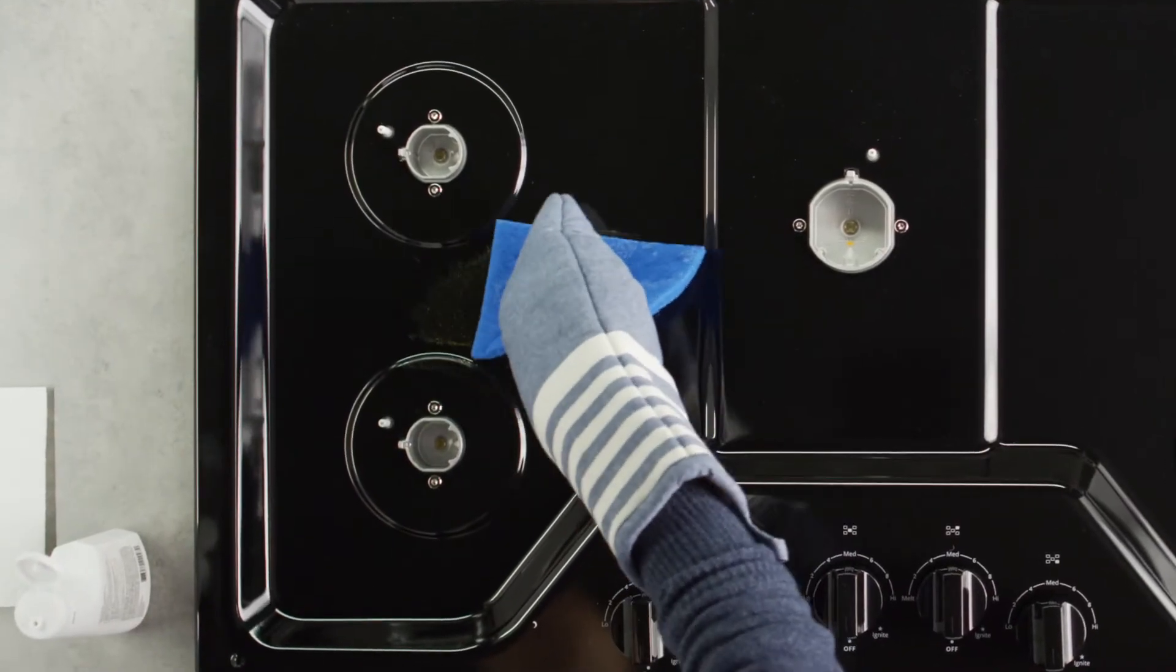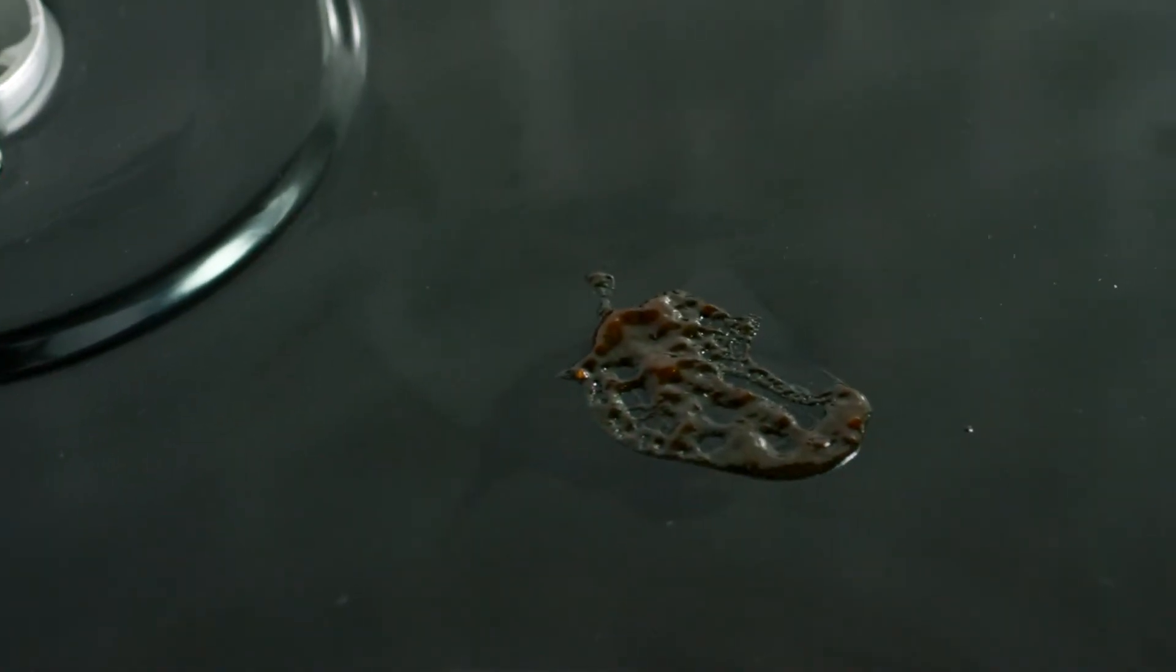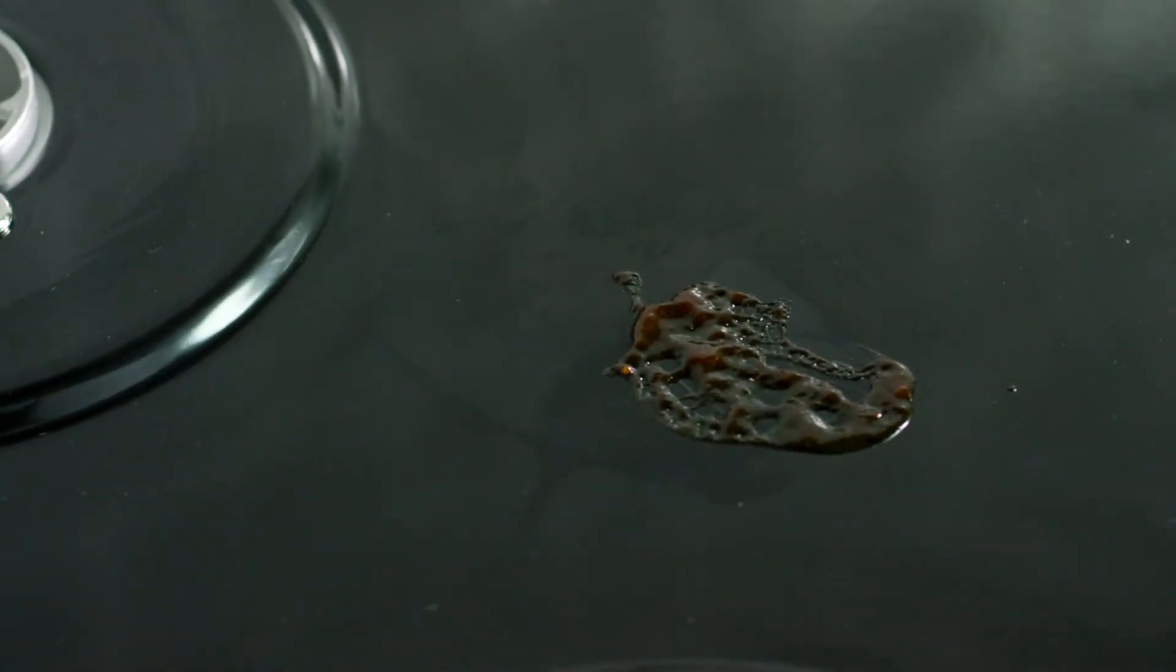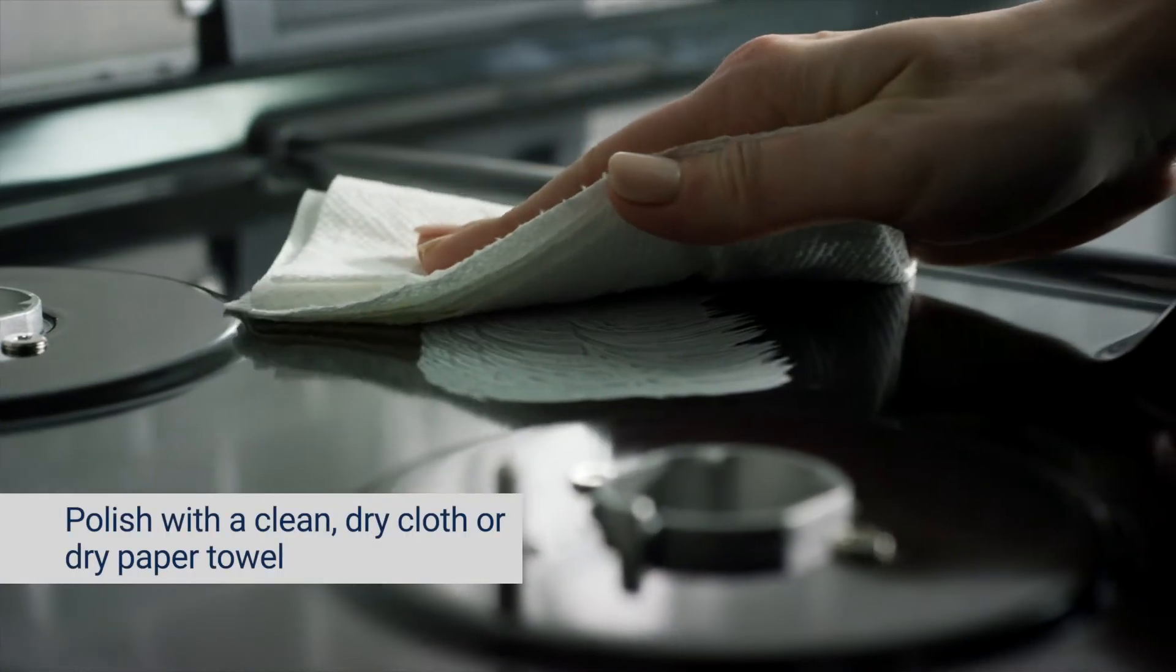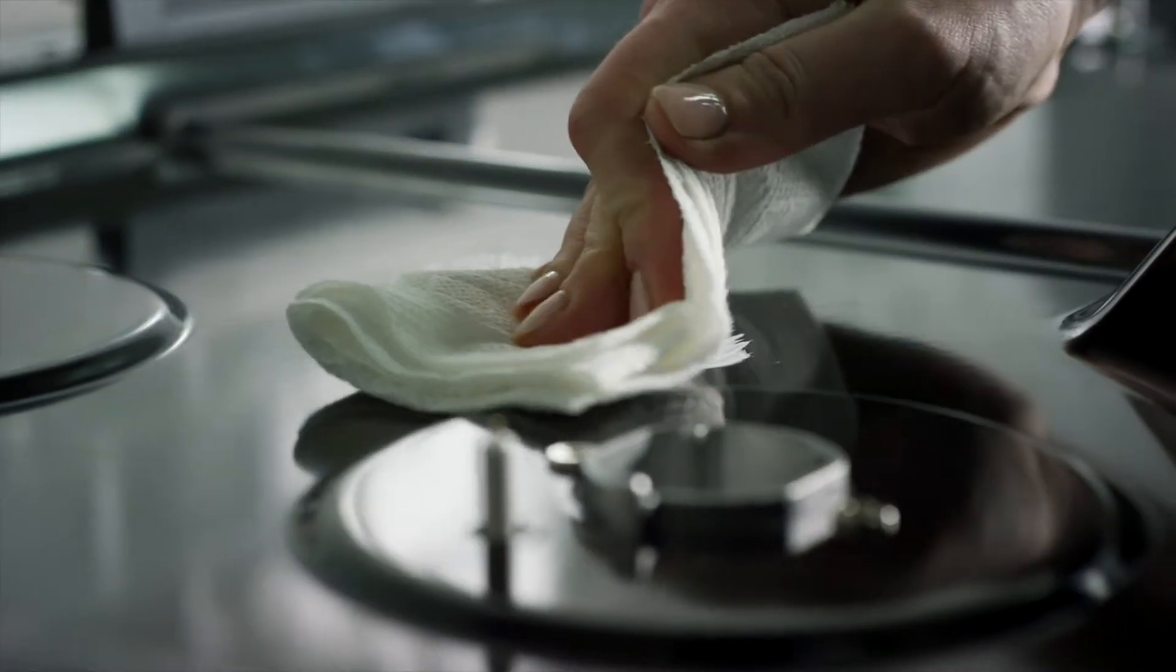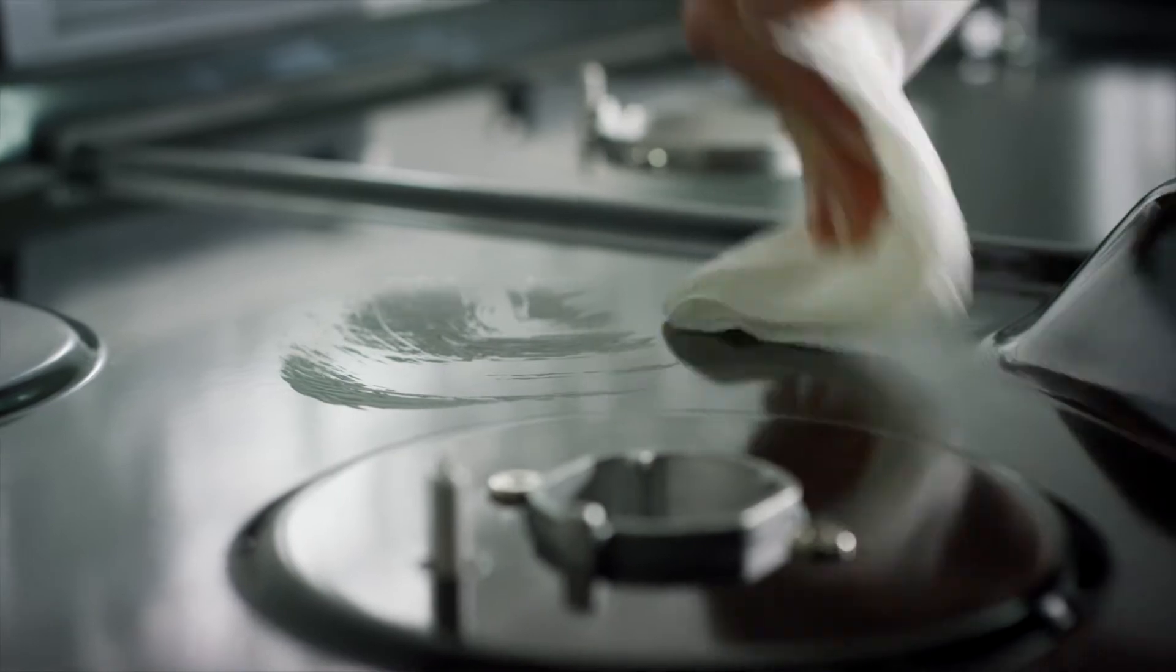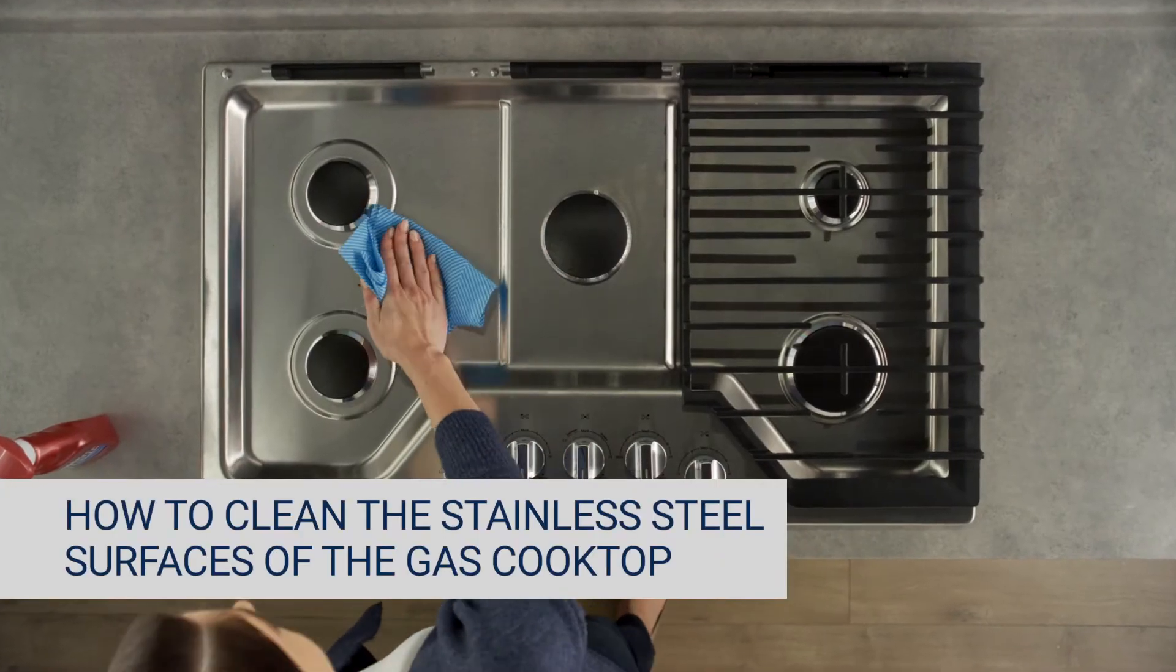For foods containing any form of sugar, you should clean the spills right away so they don't cause permanent marks. Polish with a clean dry cloth or dry paper towel. For stainless steel surfaces, use a stainless steel or all-purpose cleaner.